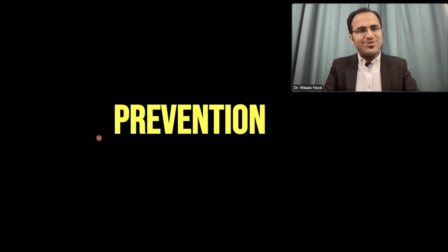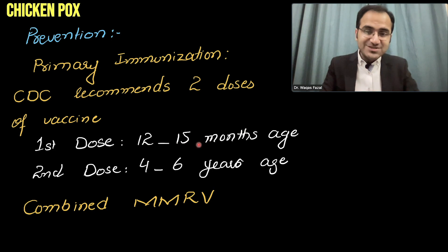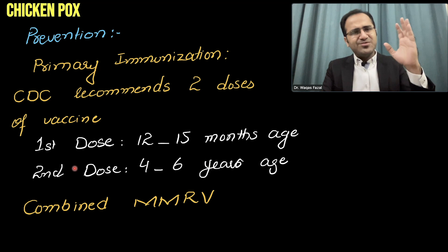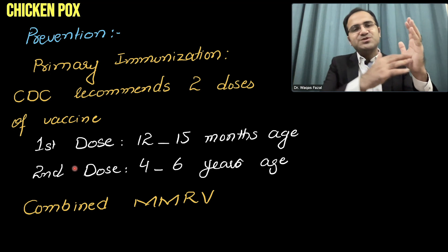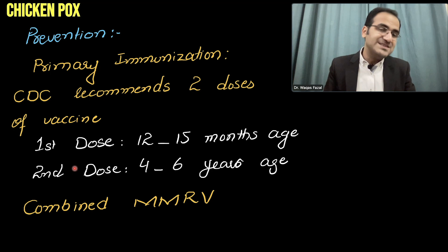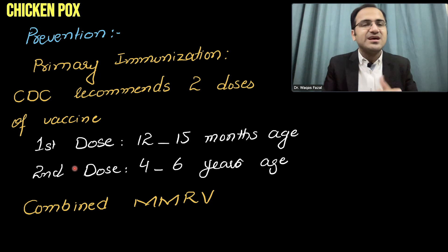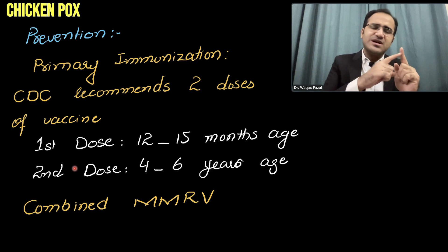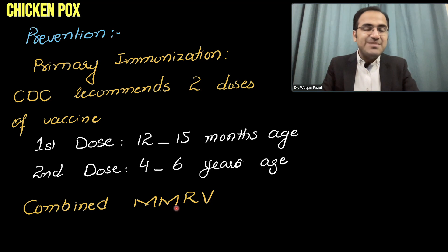Coming to the prevention of chickenpox. For primary immunization, the CDC recommends two doses of vaccine: the first dose given at 12 to 15 months of age, and the second dose at 4 to 6 years of age. Usually, one dose is enough to provide lifelong immunity. If a person got infected with chickenpox once, or was vaccinated with even a single dose, they have lifelong immunity — unless they become severely immunocompromised. The MMR vaccine is combined with the varicella zoster virus vaccine, present as the MMRV vaccine.